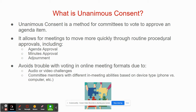Unanimous consent avoids trouble with voting in online meeting formats due to audio or video challenges on the part of any meeting participant, or committee members with different in-meeting abilities based on the device type they're using to access the meeting — for example, on a smartphone versus a computer.